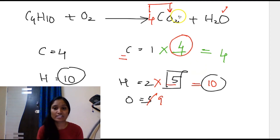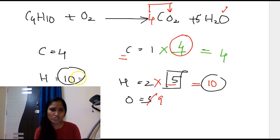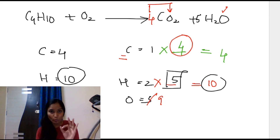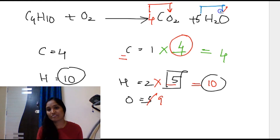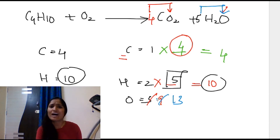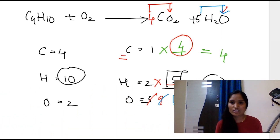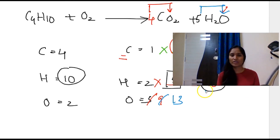After every change you make in the equation, pause and check if there's any change in the count of atoms. Now with 5H2O, we have 5 oxygens from water plus 8 oxygens from 4CO2, giving a fresh count of 13 oxygens on the right-hand side. Hydrogens are now equal. But look at oxygens: 2 on the left vs. 13 on the right.